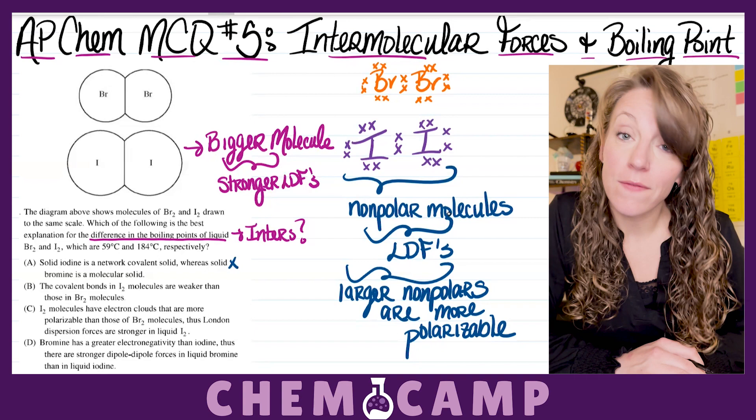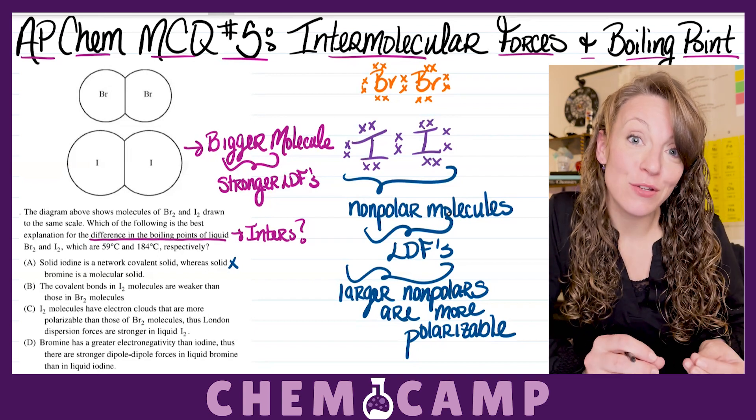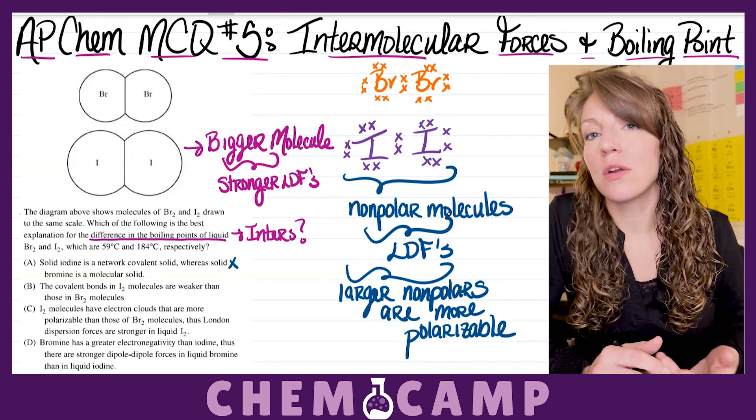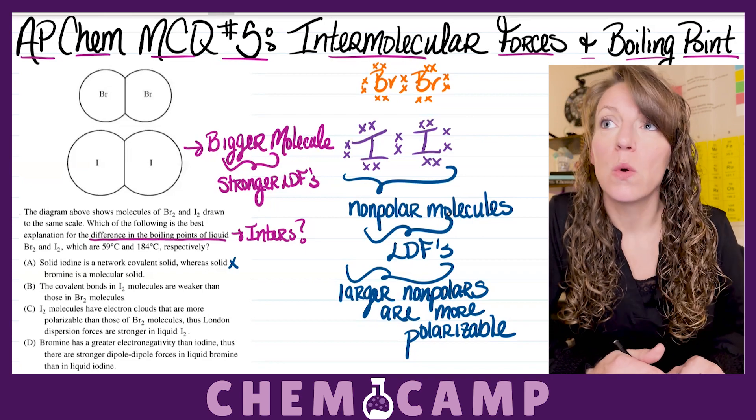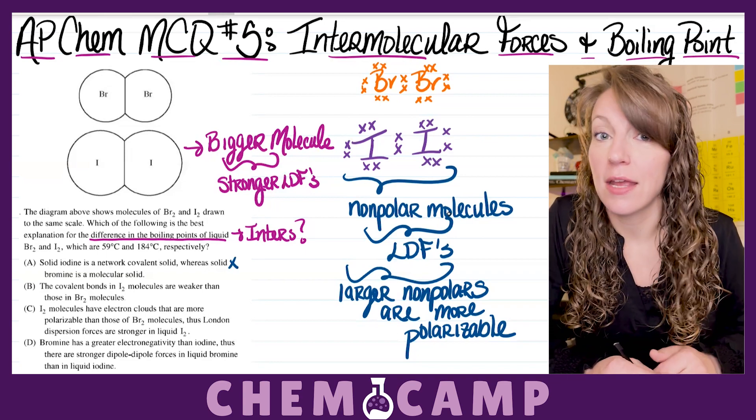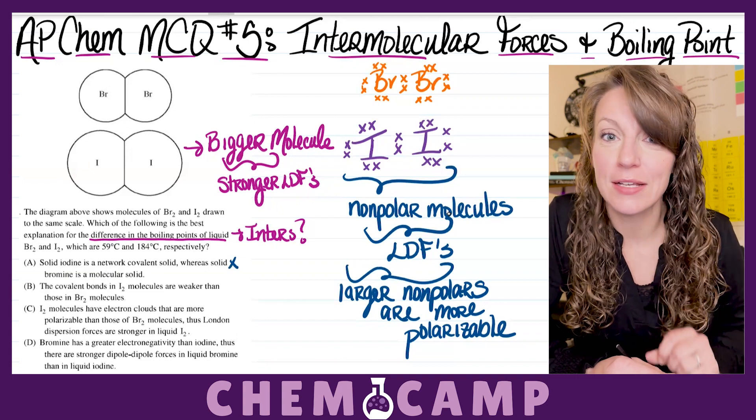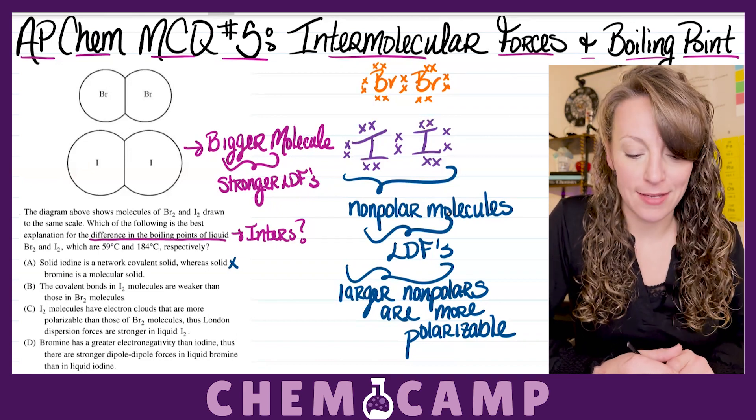Your network covalent solids, they're a very special type of situation, so you're going to want to be looking for something like carbon in the diamond form, or sand, silicon dioxide. Those are two very good examples of your network covalent solids.